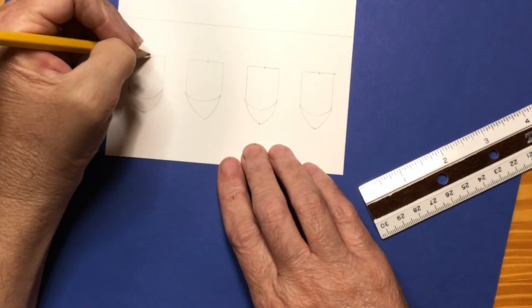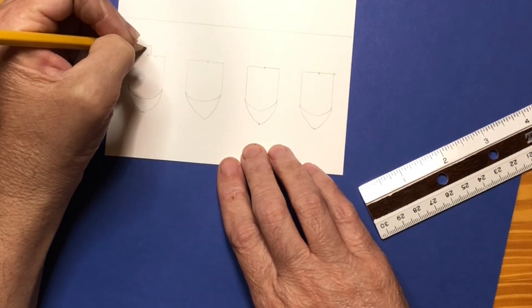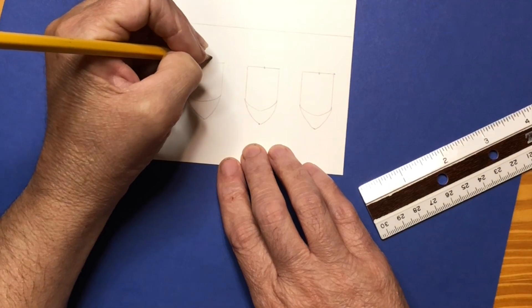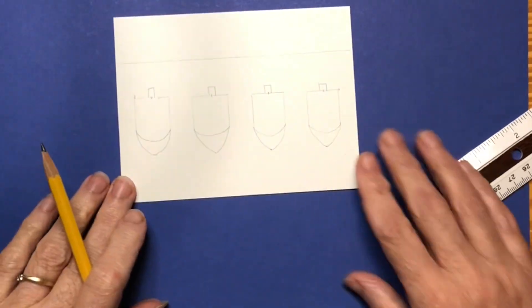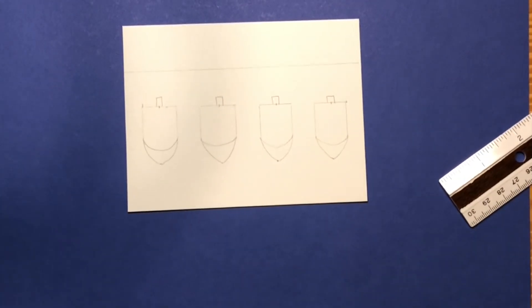And then for the tops, we're just going to free hand a little top over the center line. So I hope you're starting to see the concept of the dreidel.